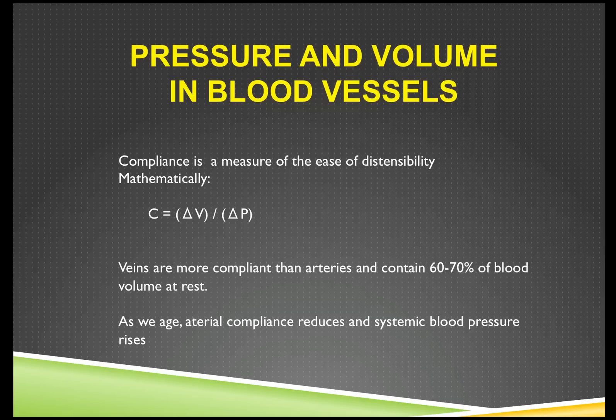Another measure of blood vessels relates to the ease of distensibility or so-called compliance. In other words, for every unit of change in volume there's a unit of change in pressure. Veins by definition are more compliant than arteries, and as such, because of their compliance they contain 60 to 70 percent of blood volume at rest. As we age, arterial compliance reduces and systemic pressure rises.